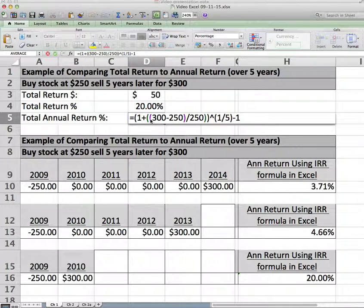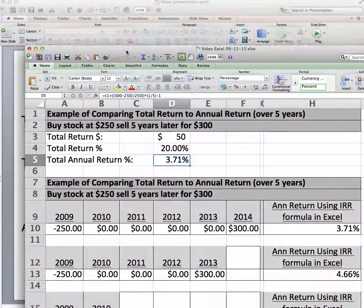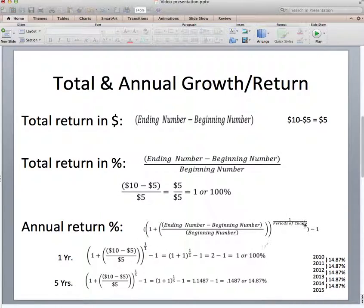For total annual return, remember we use this formula where we take the beginning minus the end divided by the beginning, $250 in parentheses, then plus 1 to the 1 fifth power and then we subtract 1. Now it's critical that you look at the order of operations back from this page, otherwise your calculation will be off.